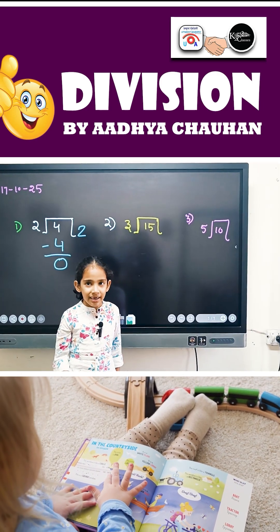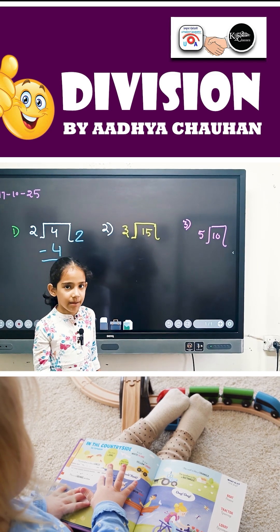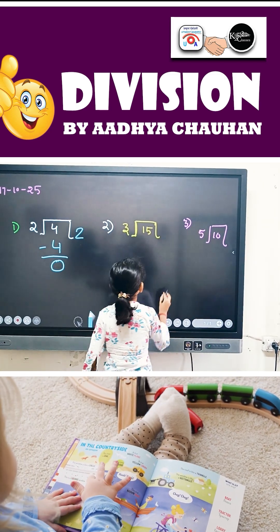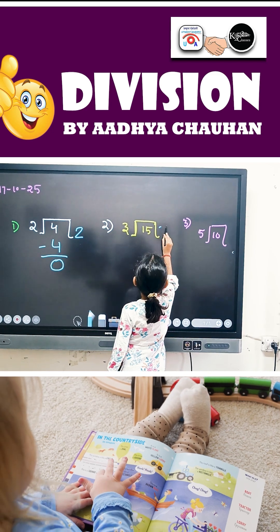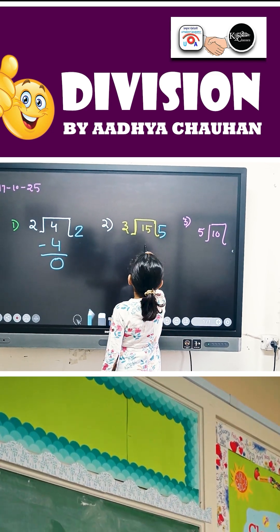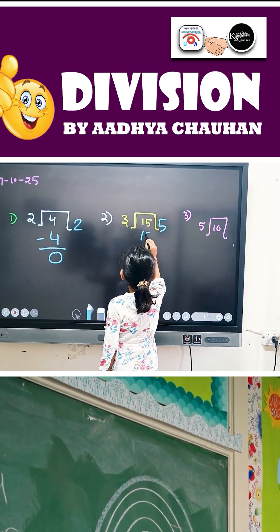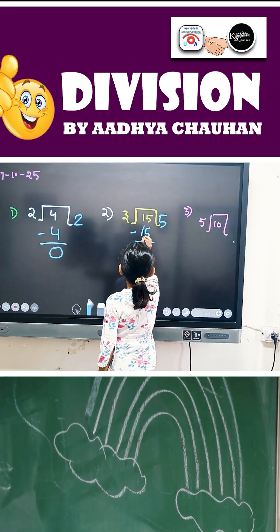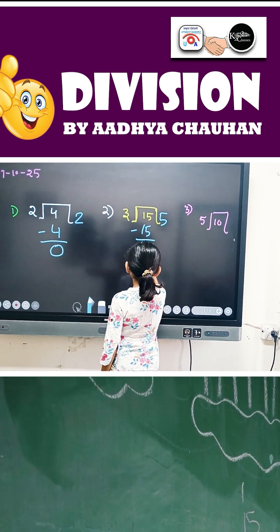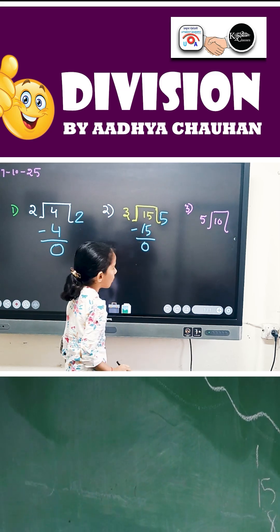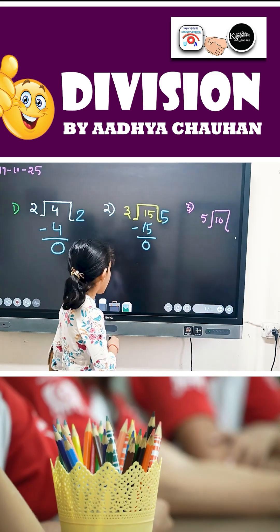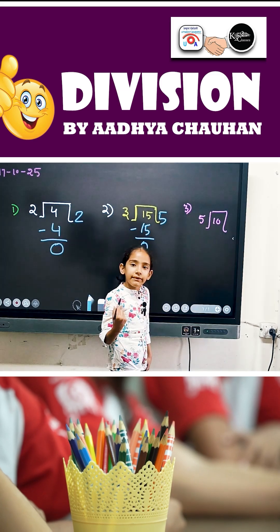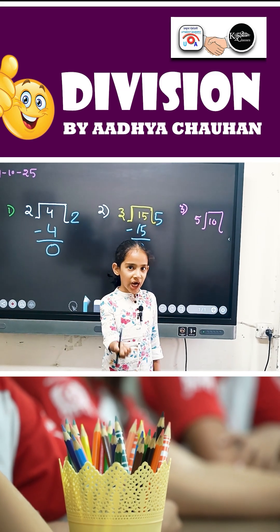Now we want to guess: in 3's table, where does 15 come? 3×5 gives 15. We write 5 here and we write 15 here. 15 minus 15 is zero. Like this, you will solve. Now in 5's table, where does 10 come? 5×2 gives 10.